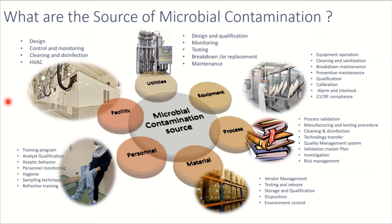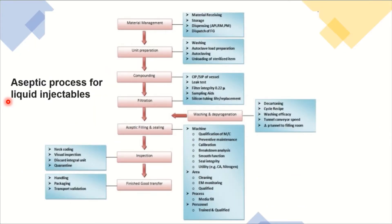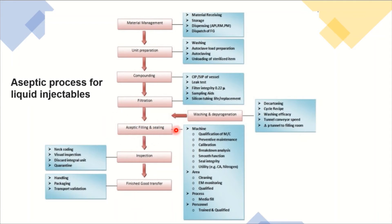This is not an exclusive list — you can explore more based on your experience. Know your process and write down the contributing steps to understand what areas, functions, and controls can be improved. This is the generic flow of an aseptic process for liquid injectable: material management, unit preparation, compounding, bioburden filtration, sterile filtration, washing of components, aseptic filling, inspection, and finished goods.